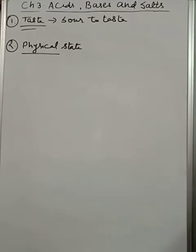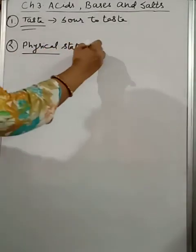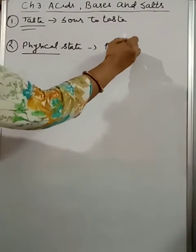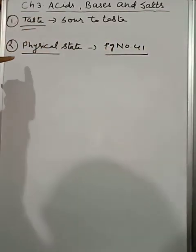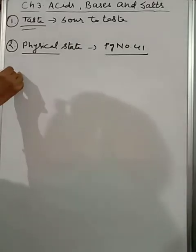Second point is physical state. For this physical state, I will suggest you to go through page number 41, where it is given very nicely. Page number 41, where there is a list of acids given, because some acids appear in solid state and some in liquid state. So please go through this table.